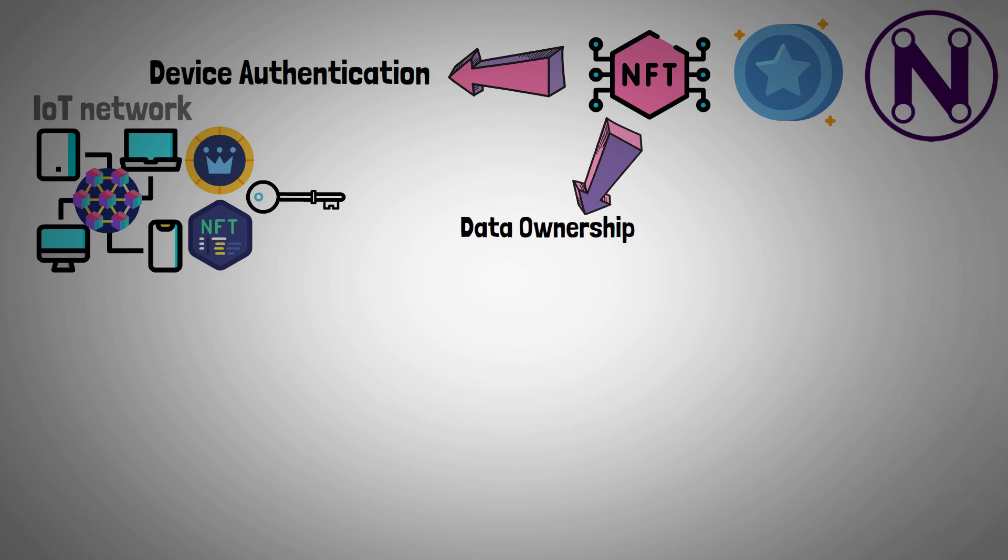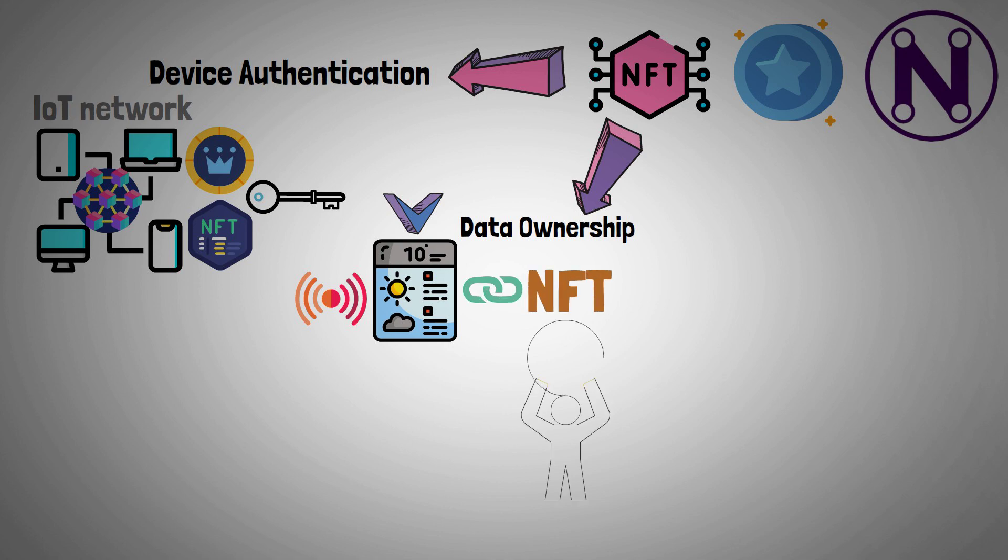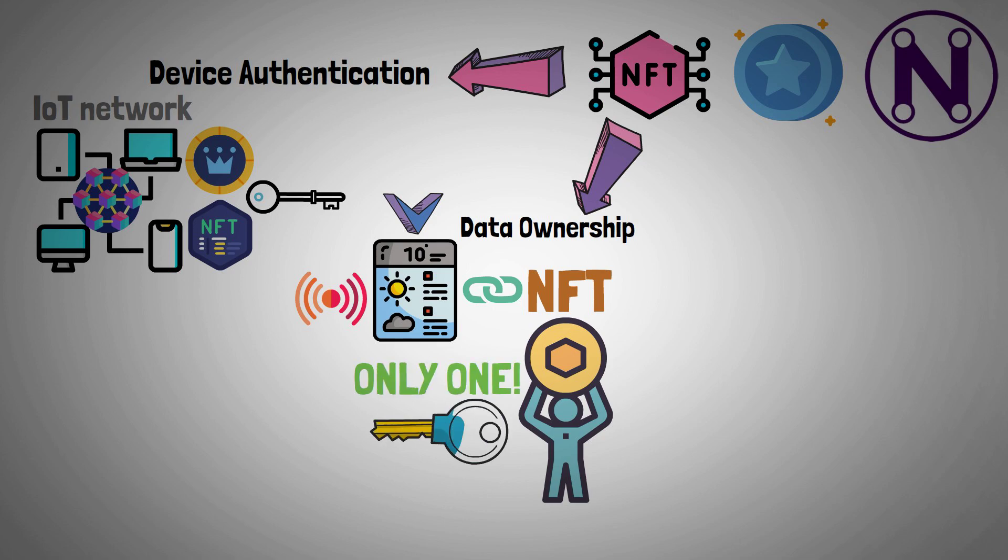Data Ownership. For example, valuable weather data generated by a sensor can be linked to an NFT and sold commercially. After that, the NFT buyer would be the only one with access to that information.